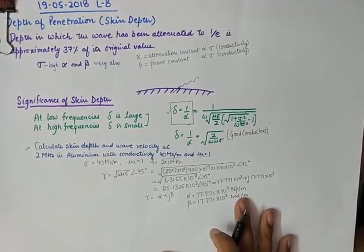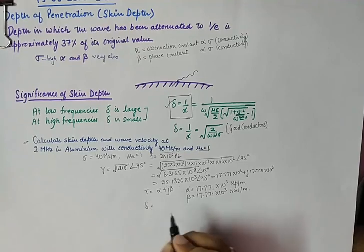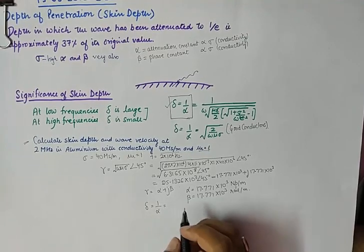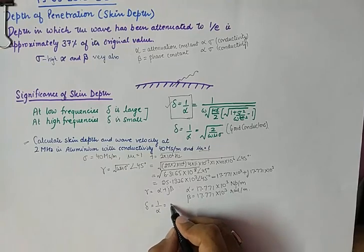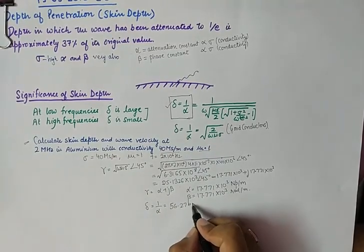And we simply need alpha for the calculation of delta. So, that will be 1 upon alpha, which becomes 56.27 micrometer.